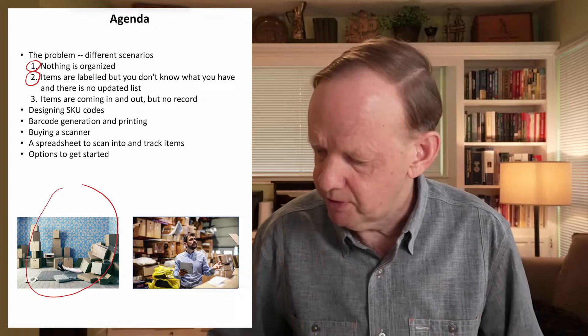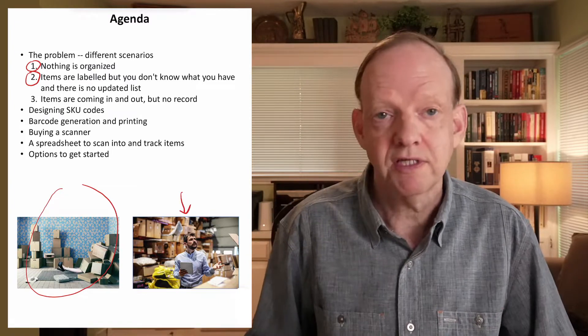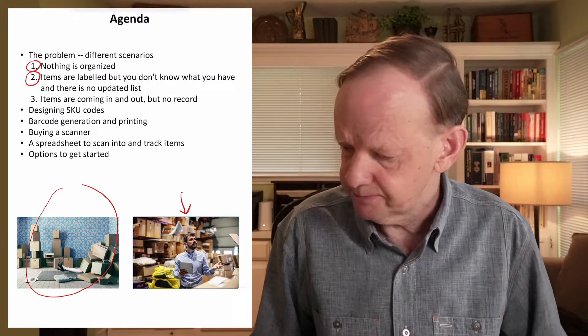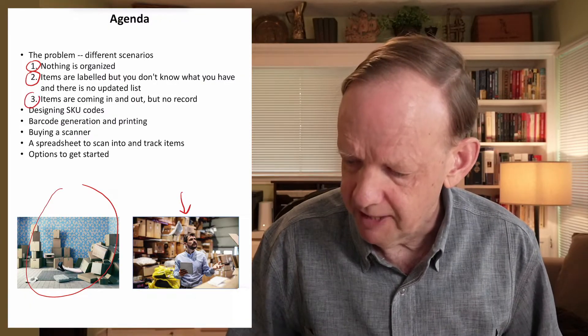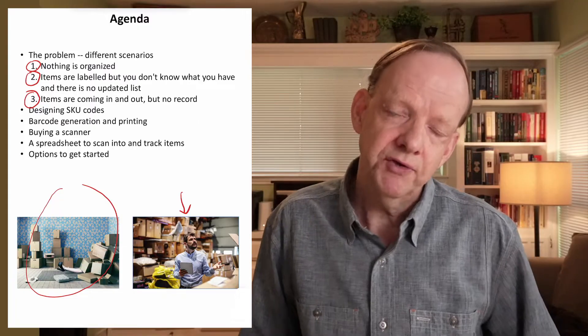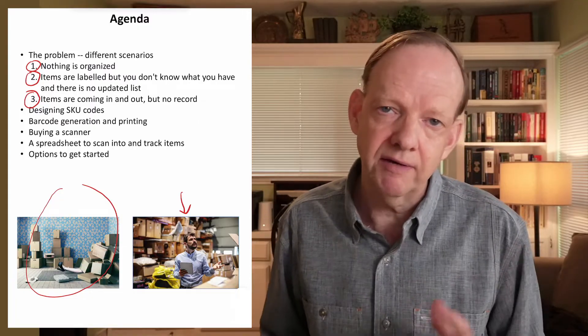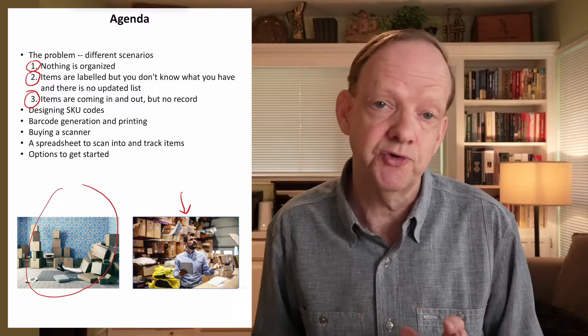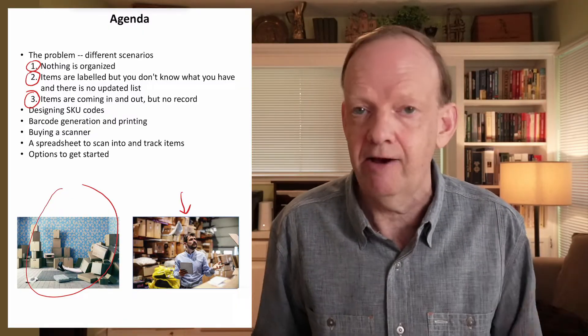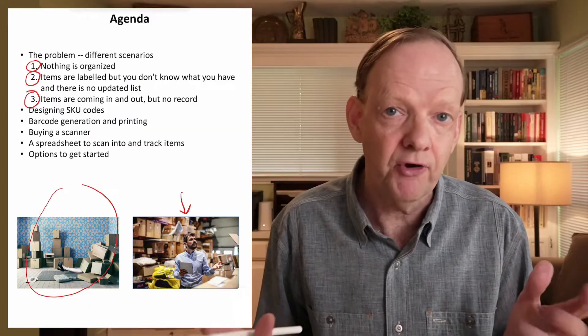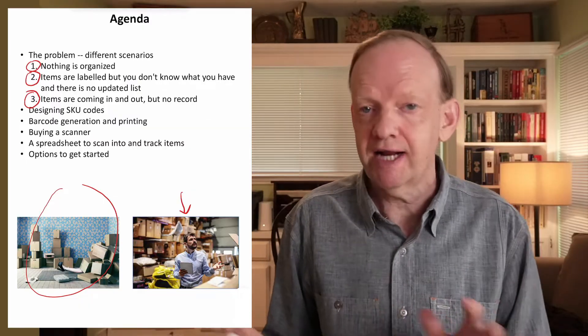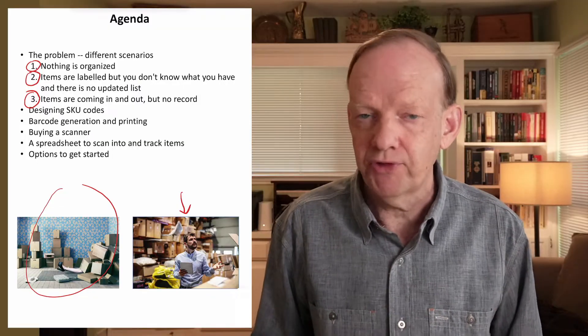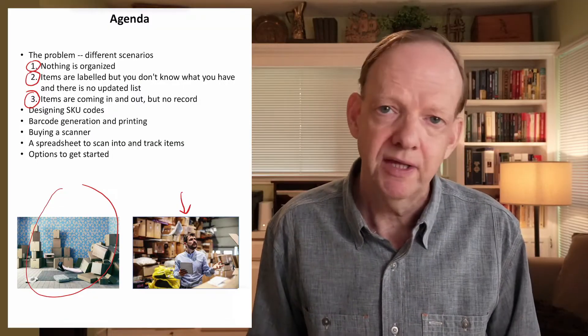Number two scenario, this person here, they have boxes of stuff that are labeled, but no clear picture of what they actually have on hand. And then number three, maybe you have a situation where you have a regular incoming and outgoing of items and they are labeled, but no clear way to track what you have right now. Maybe things are done by email or by phone and no good way to track what is incoming and what is outgoing, and therefore the total list of things you have in the company.